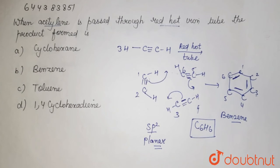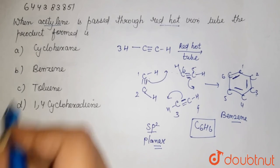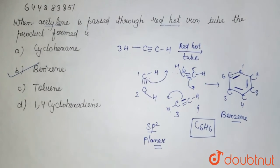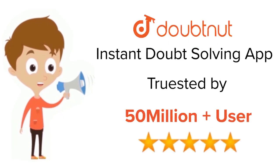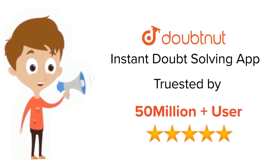So the product formed here is benzene. For class 6 to 12, IIT-JEE, and NEET level, trusted by more than five crore students - download Doubtnet app today.